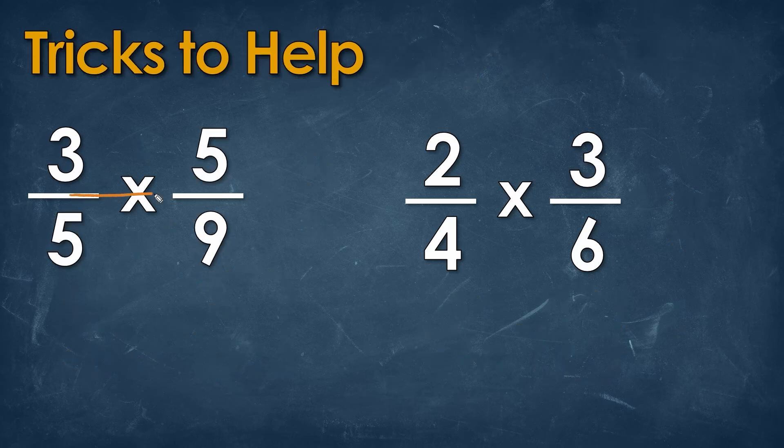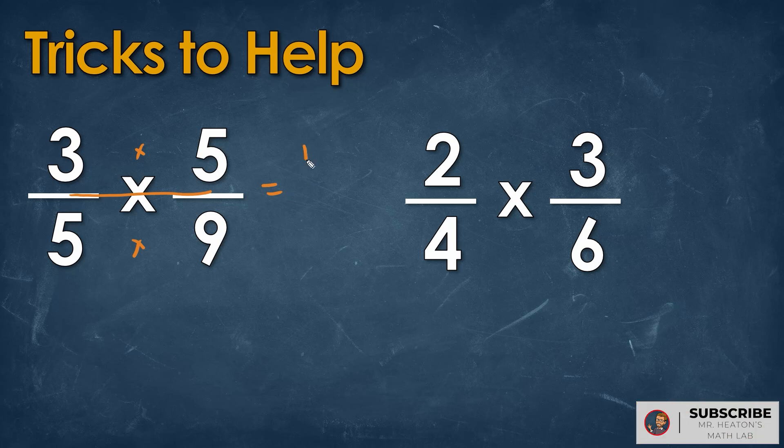Now, here's a couple tricks for whenever you're multiplying values across. If we do this example, we'll notice that we're going to get 15 on the top, and we're going to get 45 at the bottom.